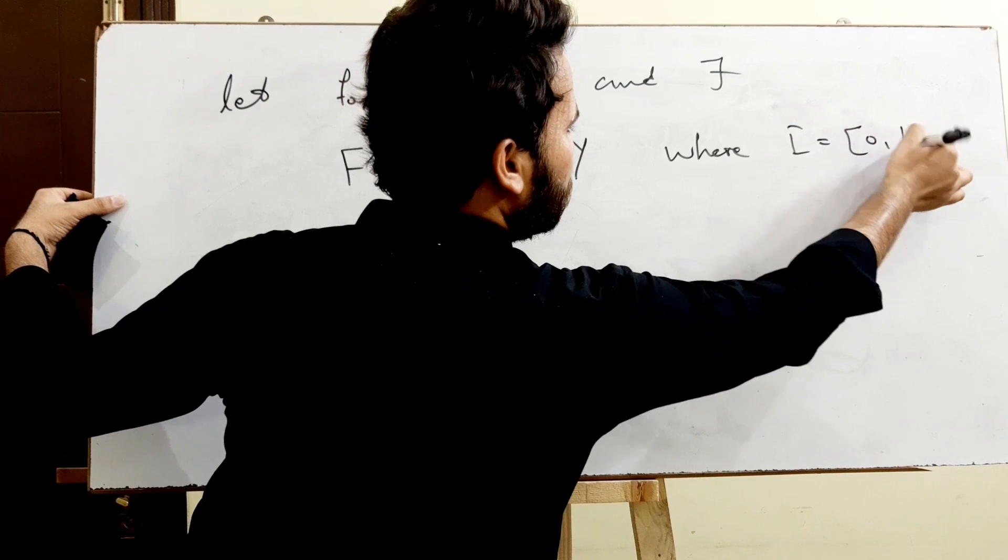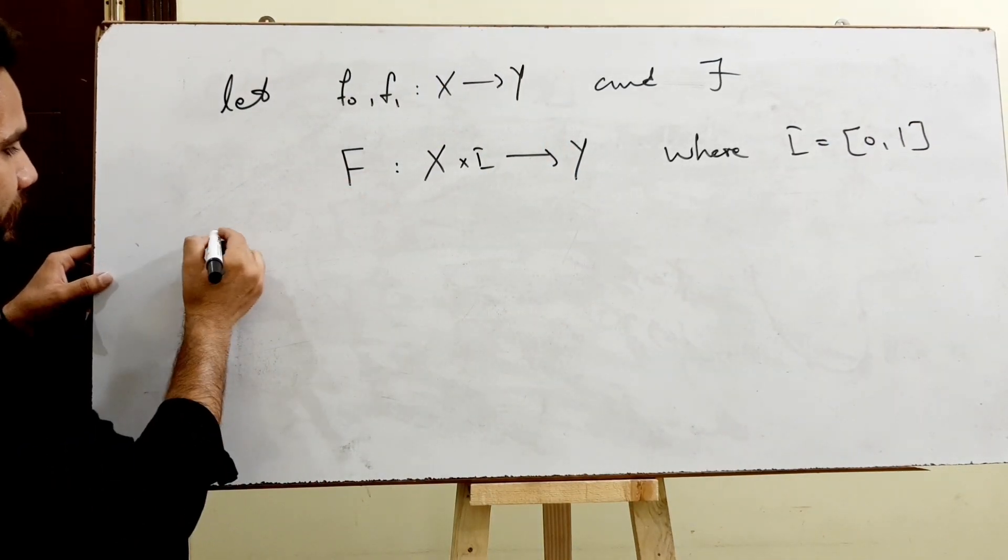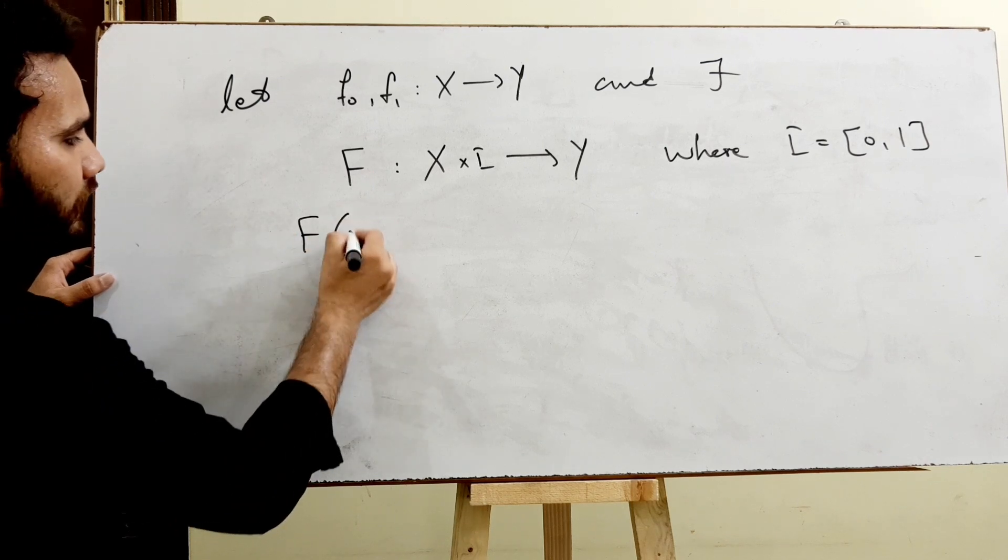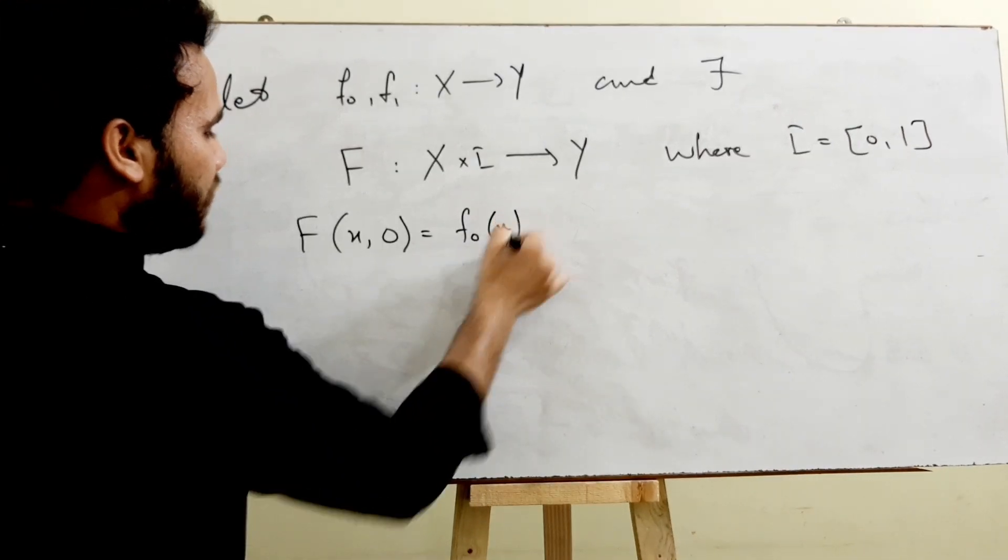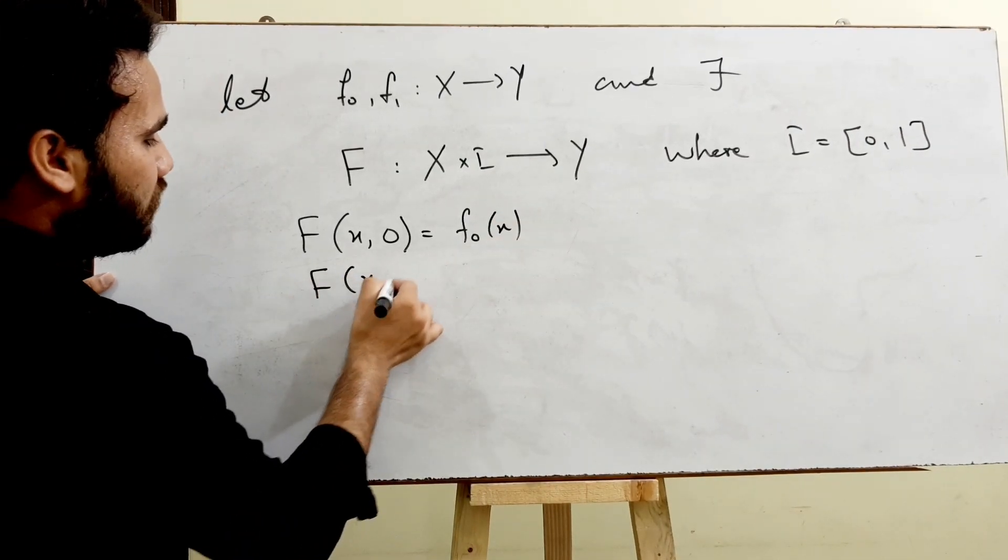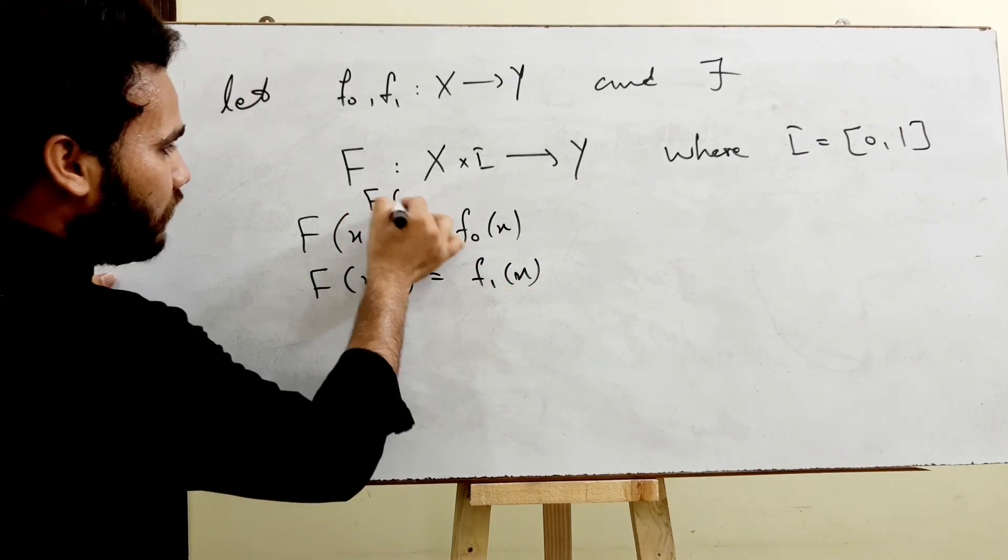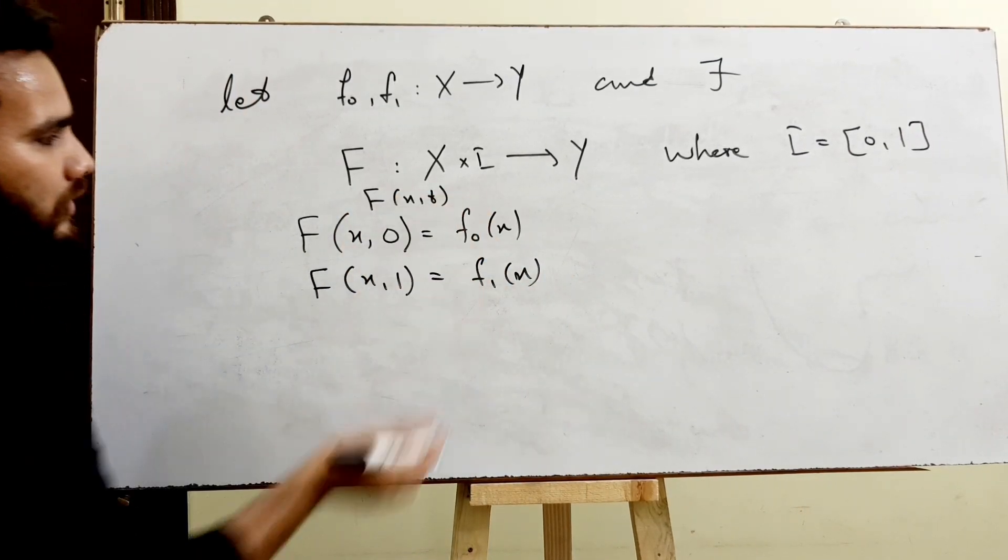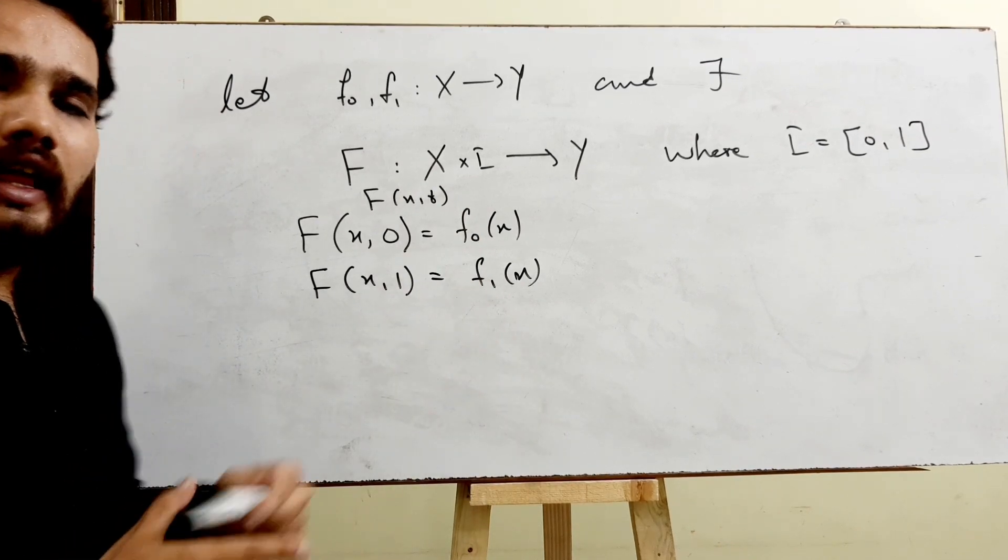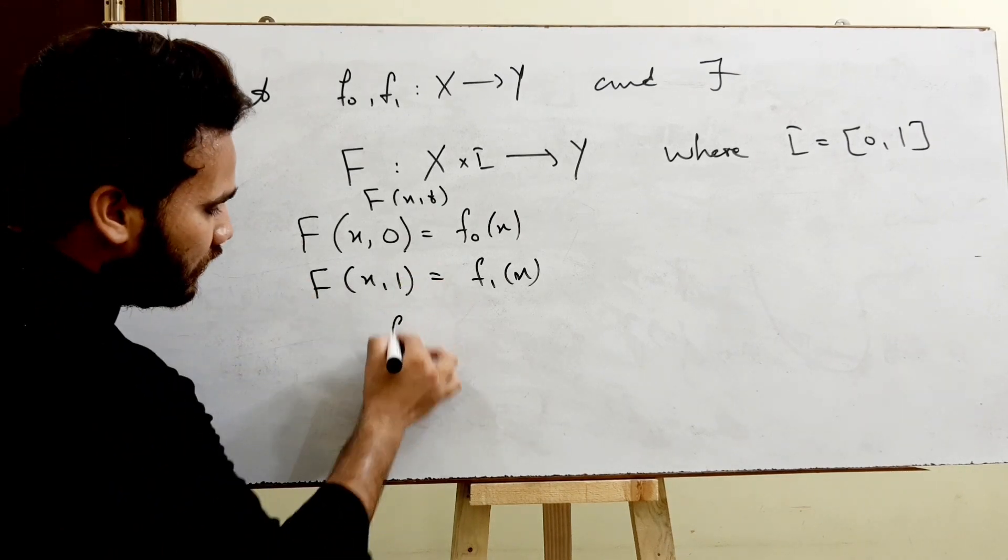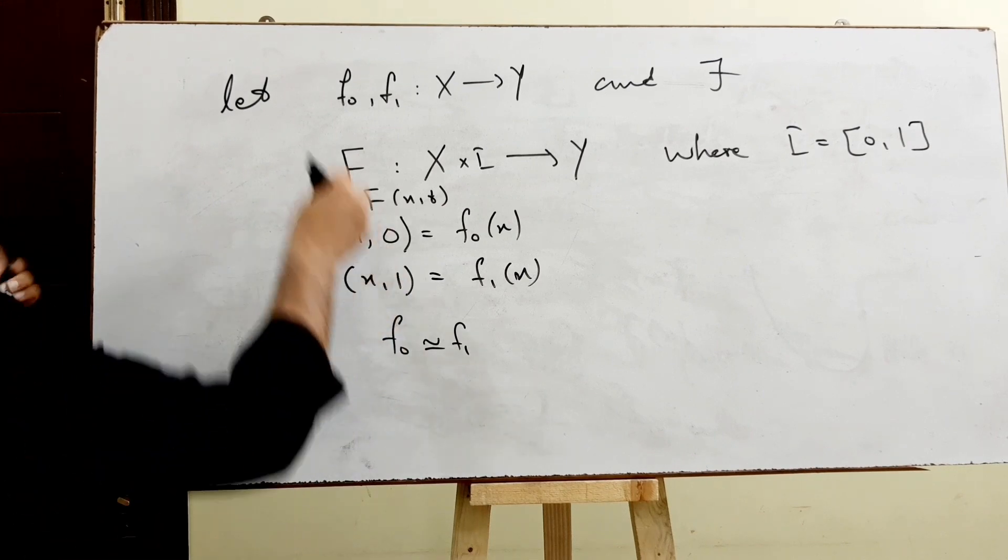And we can define this F as F(x, 0) = F0(x) and F(x, 1) = F1(x). Then this F(x, t) has a time variable. If this condition is satisfied, then we can say that F0 is homotopic to F1.